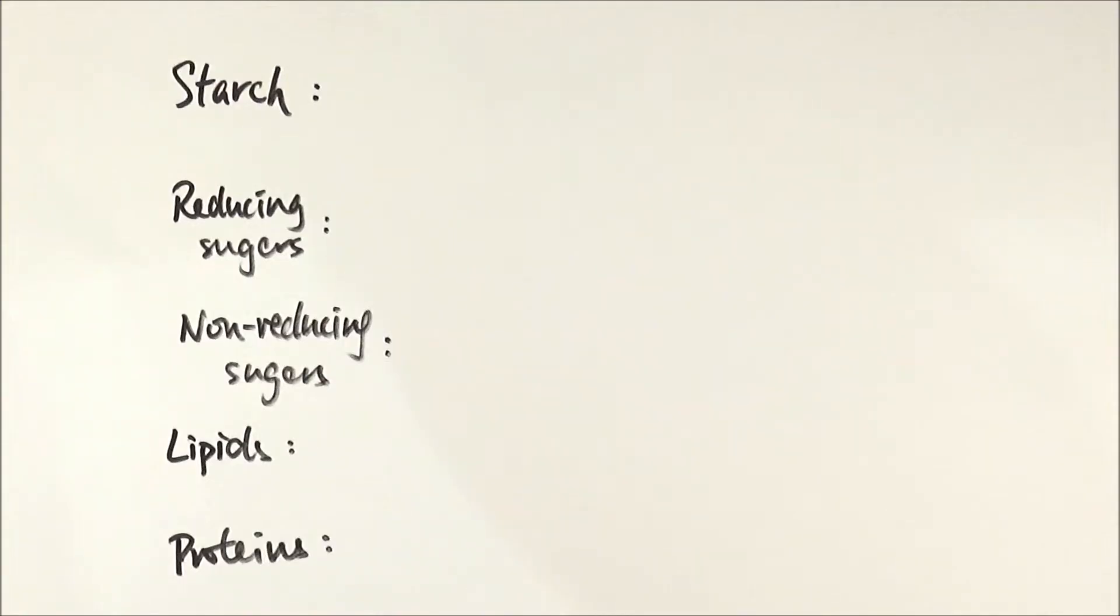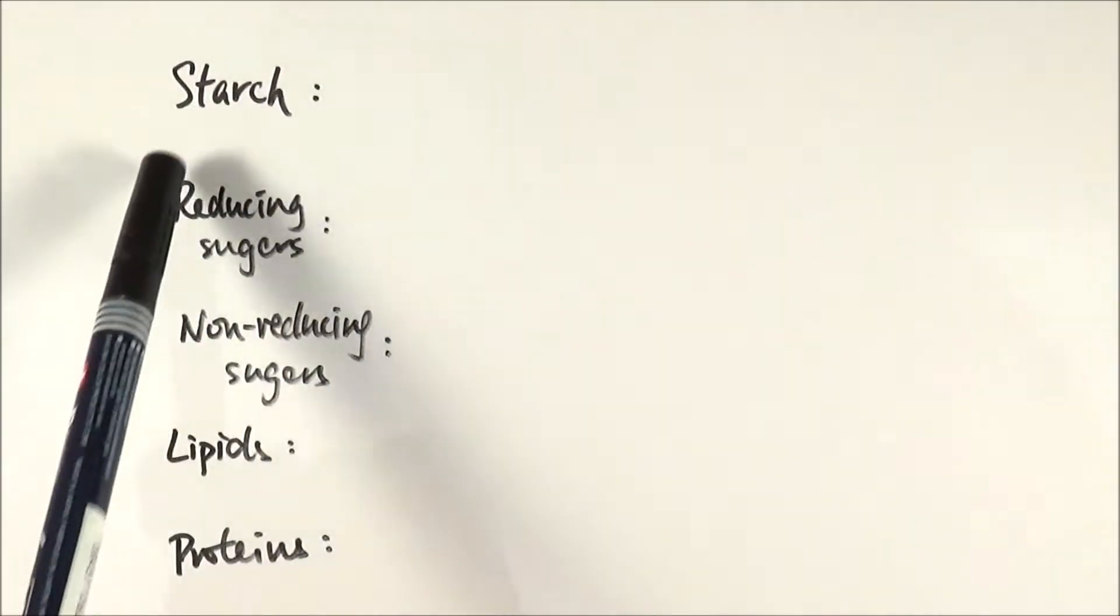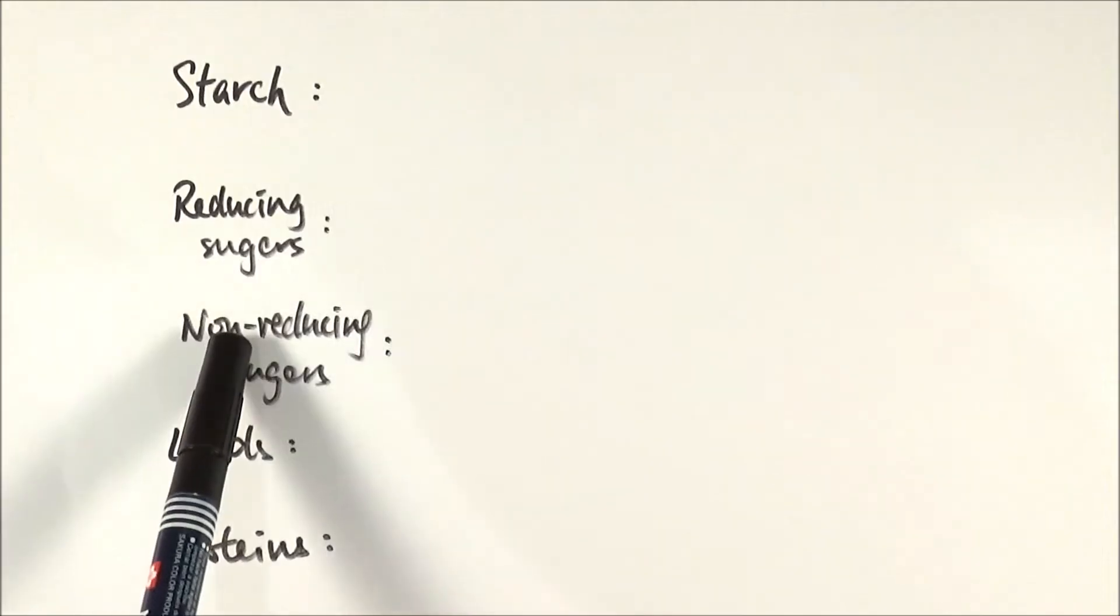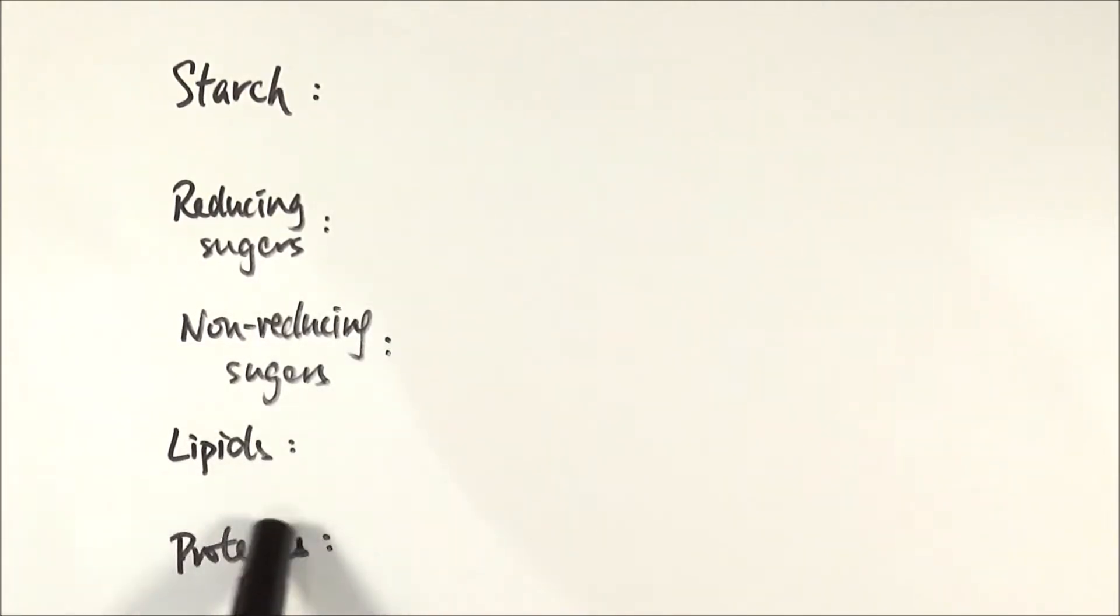In this video, we'll be doing a summary of all the tests for biological molecules. There will be three main types: carbohydrates including starch, reducing sugars and non-reducing sugars, and then lipids and proteins.